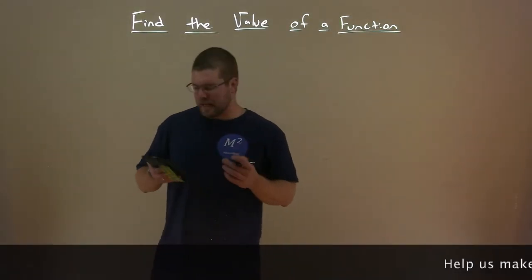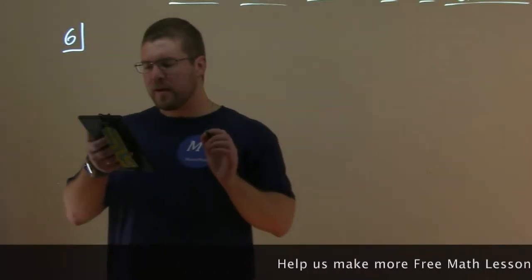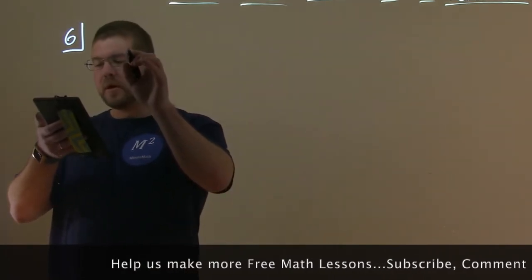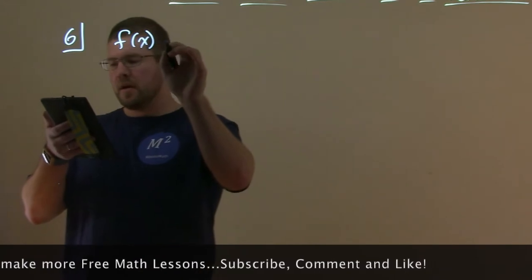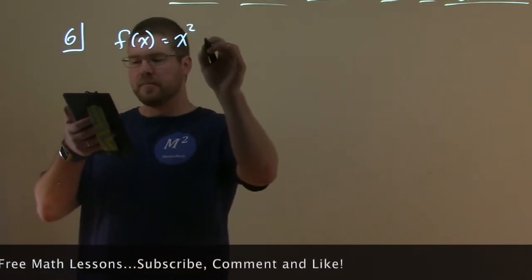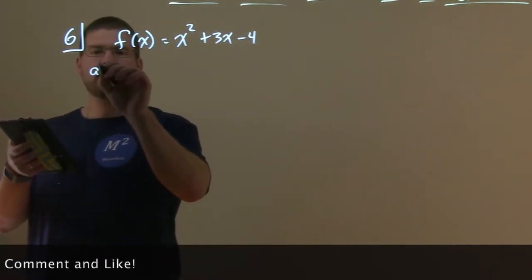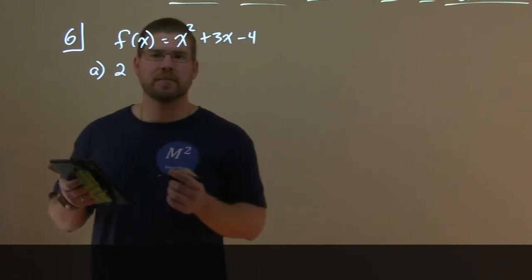Alright, we'll start with Example 6. We want to evaluate this function at specific points. We have f(x) equals x squared plus 3x minus 4, and we're going to evaluate that at a, at 2.